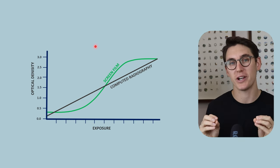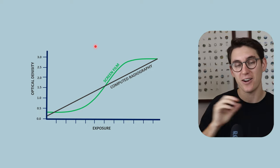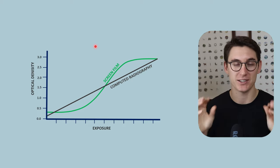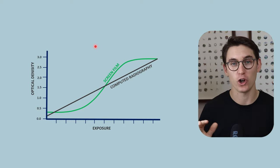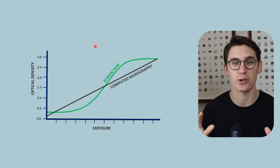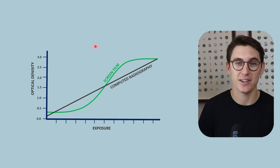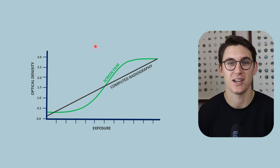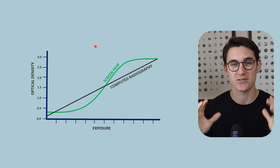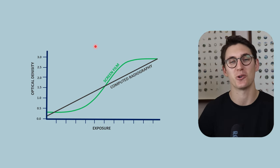Now we've looked at computed radiography and screen film radiography — our cassette-based radiography systems. Next we'll move on to digital radiography, looking at indirect and direct digital radiography systems. Knowing the difference between computed radiography and direct and indirect digital radiography systems is really important for exams. In the next talk we're going to look at the process of scintillation, which is foundational when looking at indirect digital radiography systems.